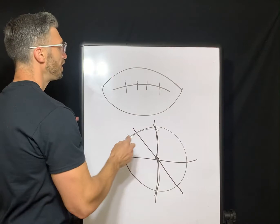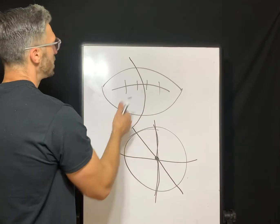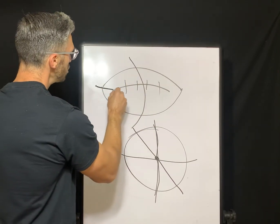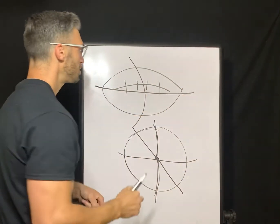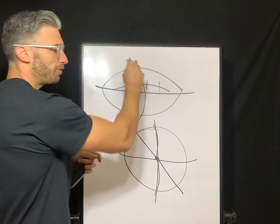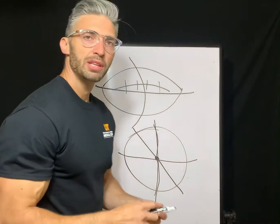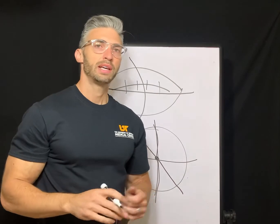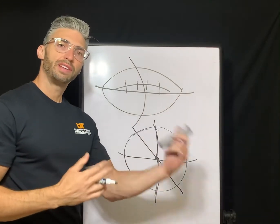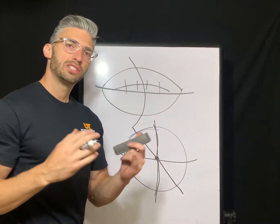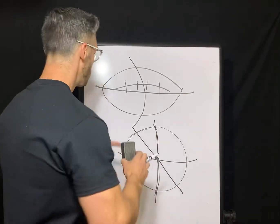Astigmatism is more like a football, where this meridian — our vertical 90 — might be steeper. If you imagine the curve on a football, it's much less drastic and flatter in the other direction. A football laying like this is a good example of with-the-rule astigmatism — your vertical meridian is steeper, so it'd be like the cornea is steeper in the vertical meridian. This is astigmatism: light is entering at different steepnesses, a flattest point and a steepest point, causing that light to fall upon the retina in a linear fashion instead of the point we really want.